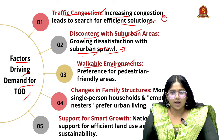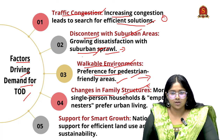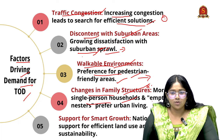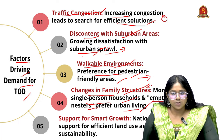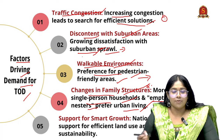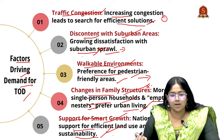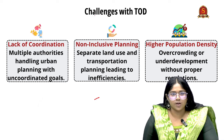Next, demand for TOD comes from preference for walkable environments — pedestrian-friendly areas with beautification of nature. Next is changes in family structures — there are many single-person households and also empty nesters, people who move out from home for studies, who prefer urban living. They need public transit and amenities in the same area for affordable traveling and jobs. Next is support for smart growth — there is now national support for efficient land use and sustainable economic and environmental growth.